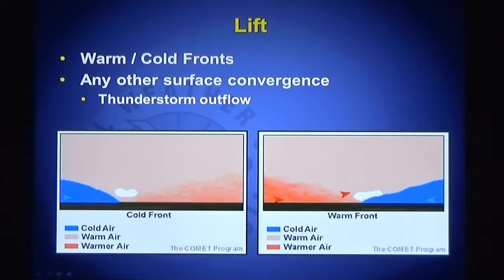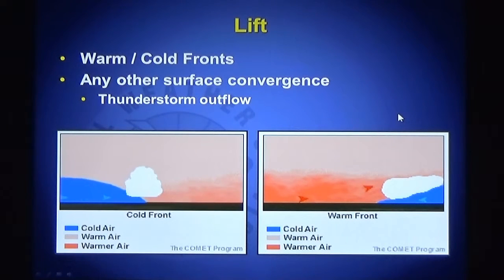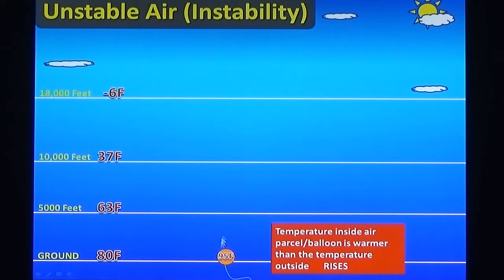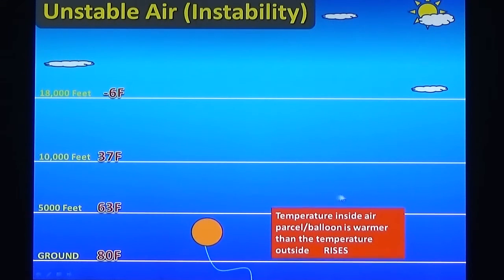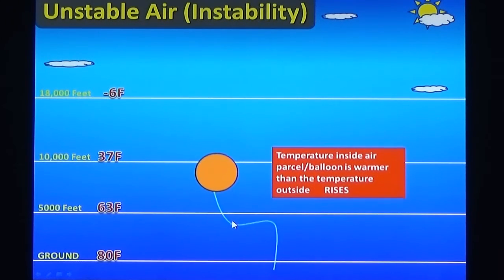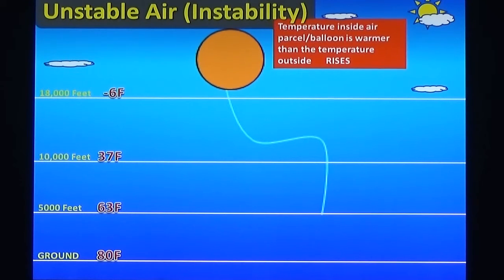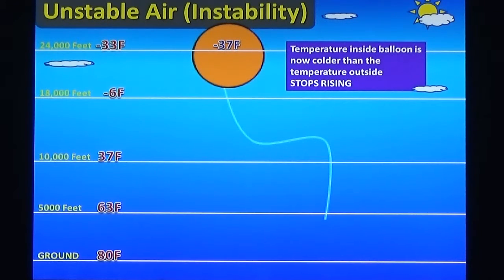Fronts provide the lift that we need to get parcels of air rising. Warm fronts provide gentle lift, but it's the cold fronts we're more interested in. At a cold front, the upward motion is more abrupt, increasing the chances of getting showers and thunderstorms to develop. When a parcel of air is warmer than the air all around it, that parcel will start to rise. Rising air cools off as it lifts through the atmosphere, but as long as it stays warmer than the surrounding air, the atmosphere is considered unstable and that parcel will keep rising until it becomes equal to or colder than the surrounding air. We need an unstable atmosphere to grab those moist parcels lifted by fronts and keep them rising until we get thunderstorms to form.